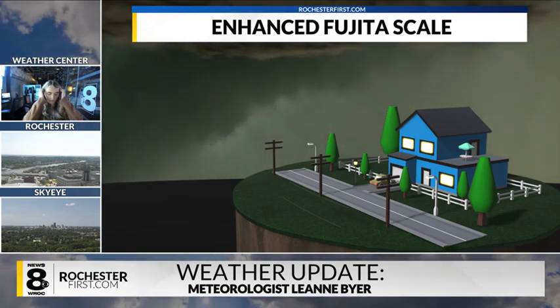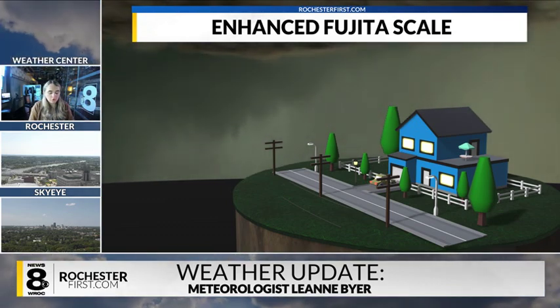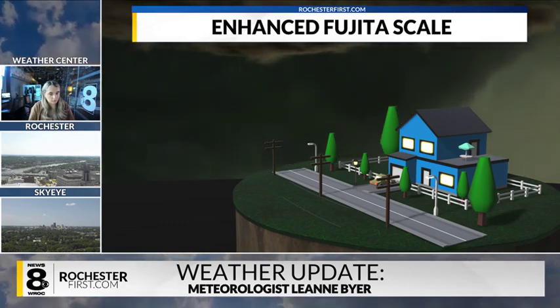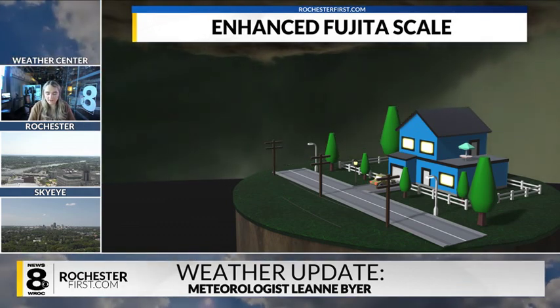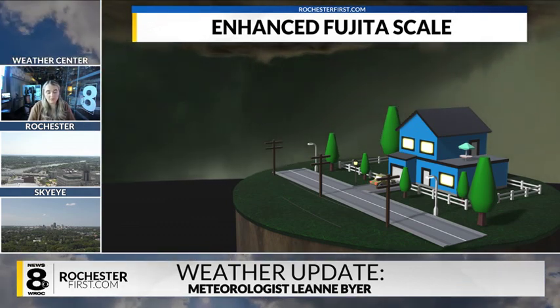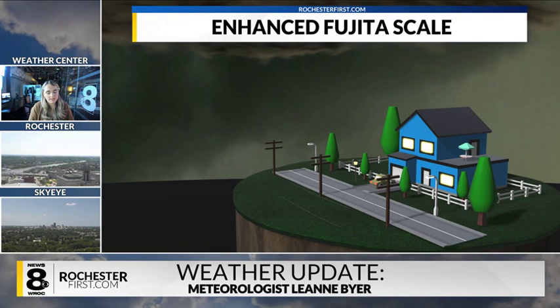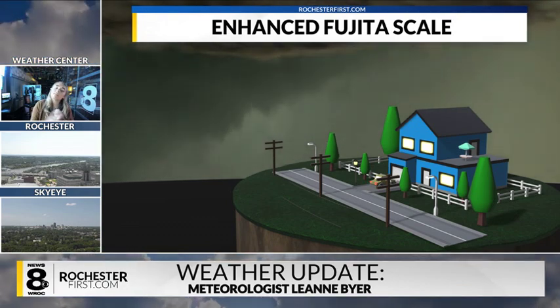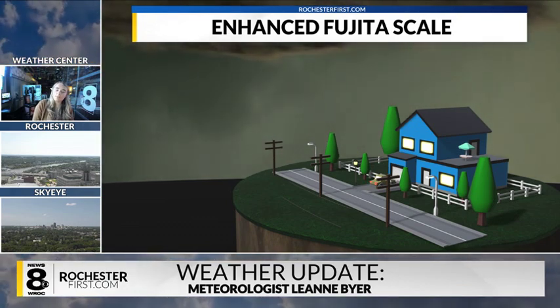There are two main things that meteorologists use to categorize tornadoes: the damage associated with the tornado, and then they use that damage to try and figure out the range of wind speeds that the tornado could have been at.